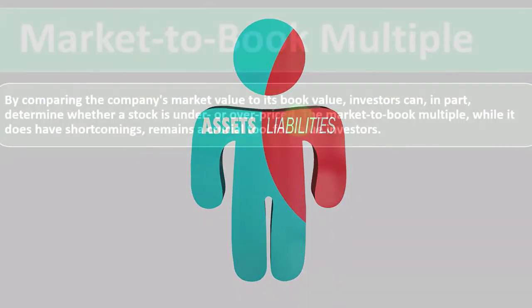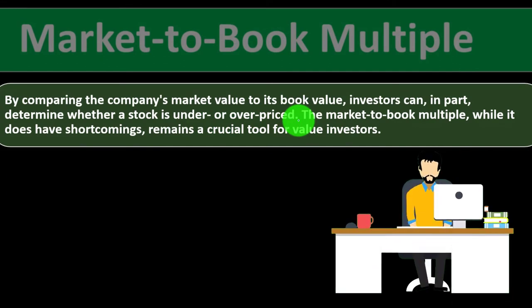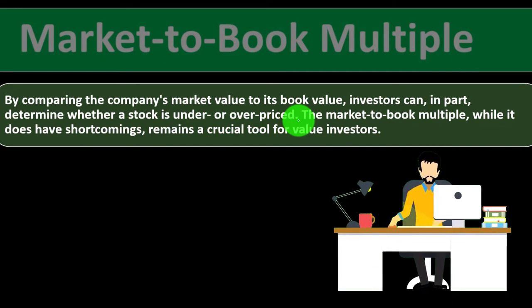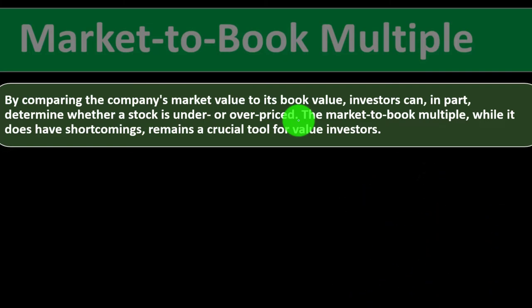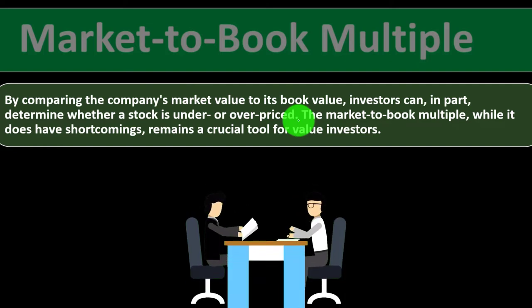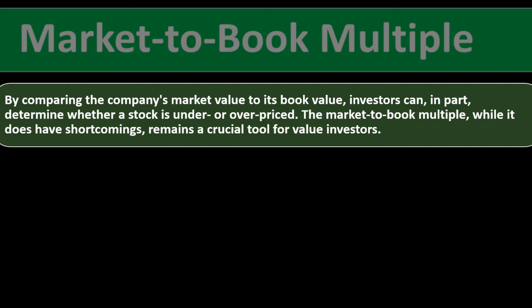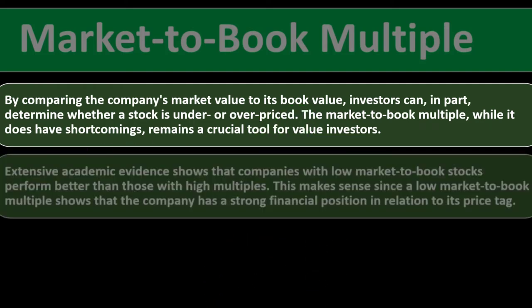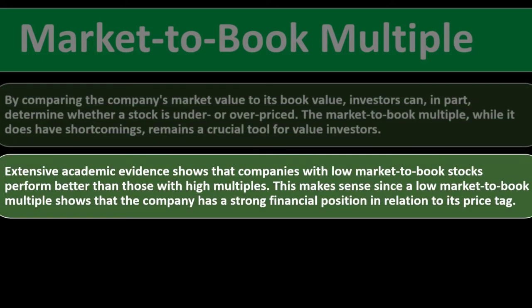The market-to-book multiple, while it has shortcomings, remains a crucial tool for value investors. Extensive academic evidence shows that companies with a low market-to-book ratio perform better than those with high multiples. A low market-to-book multiple indicates the company has a strong financial position relative to its price tag, meaning the stock price is closer to its underlying book value rather than trading at a large premium.